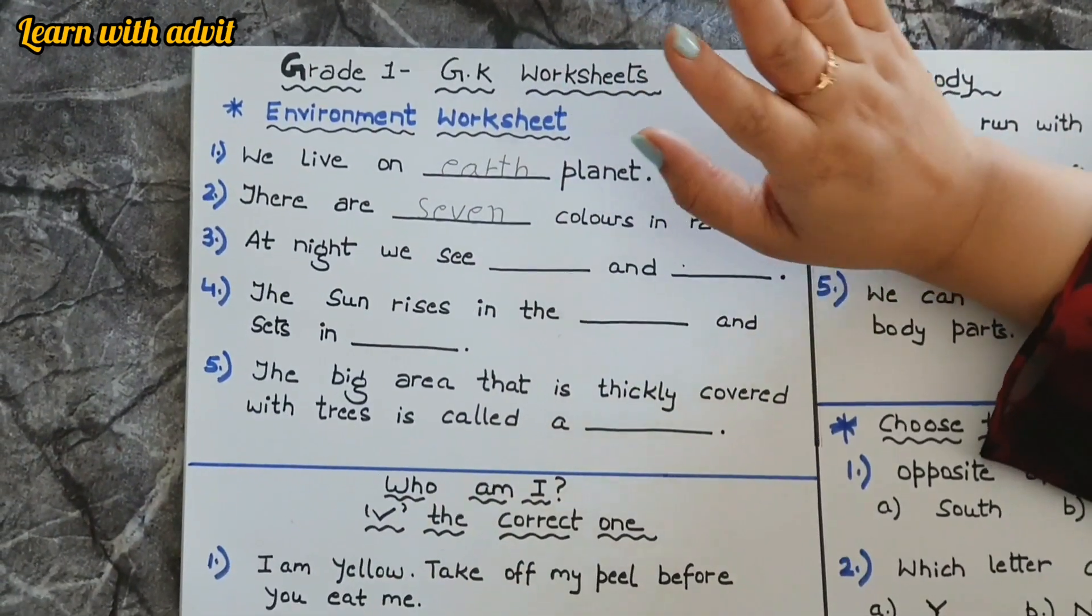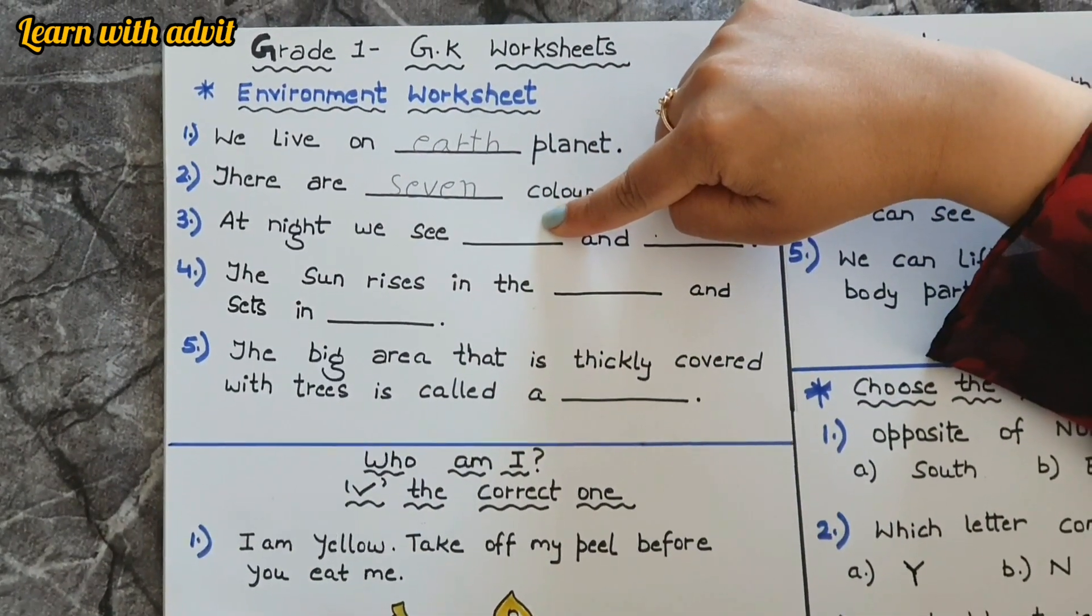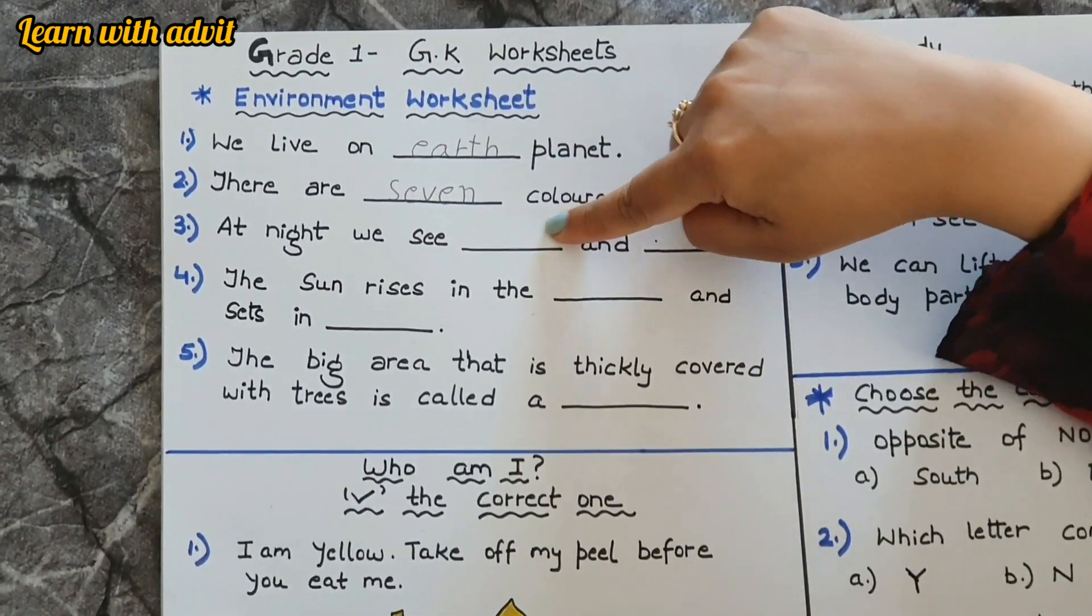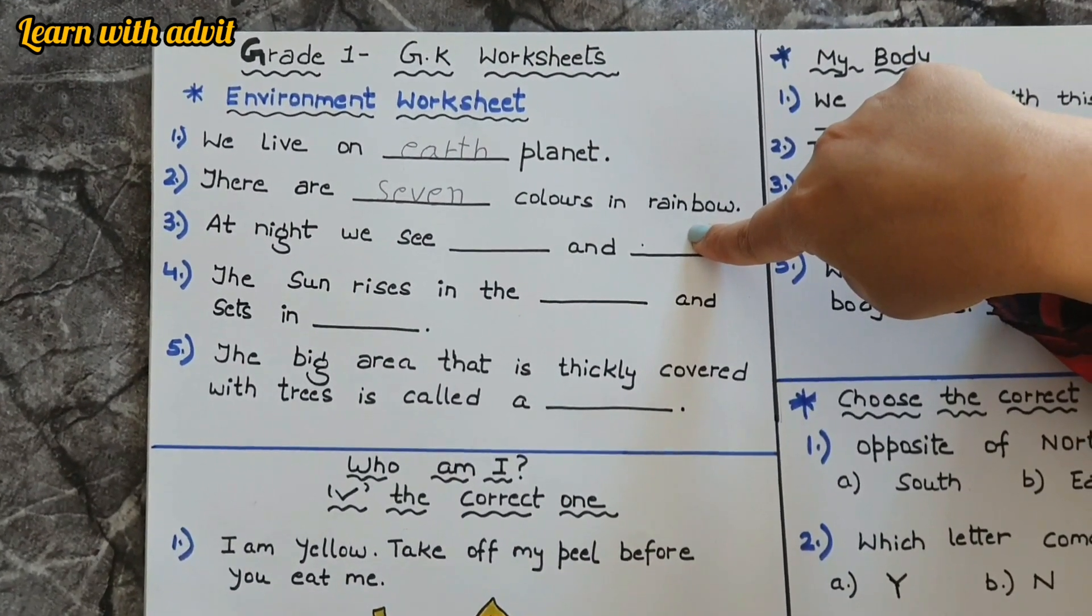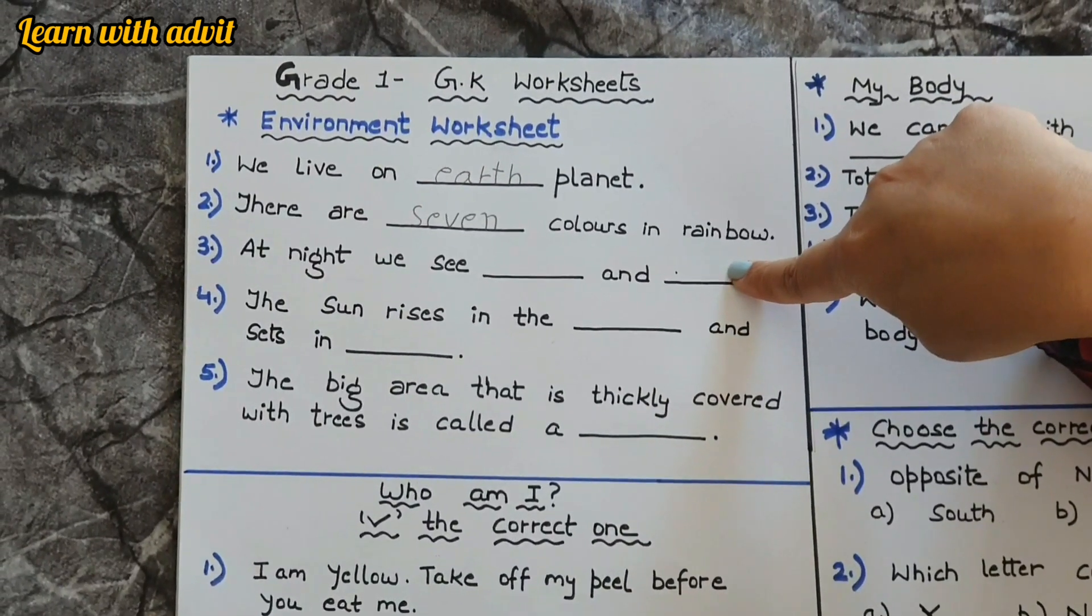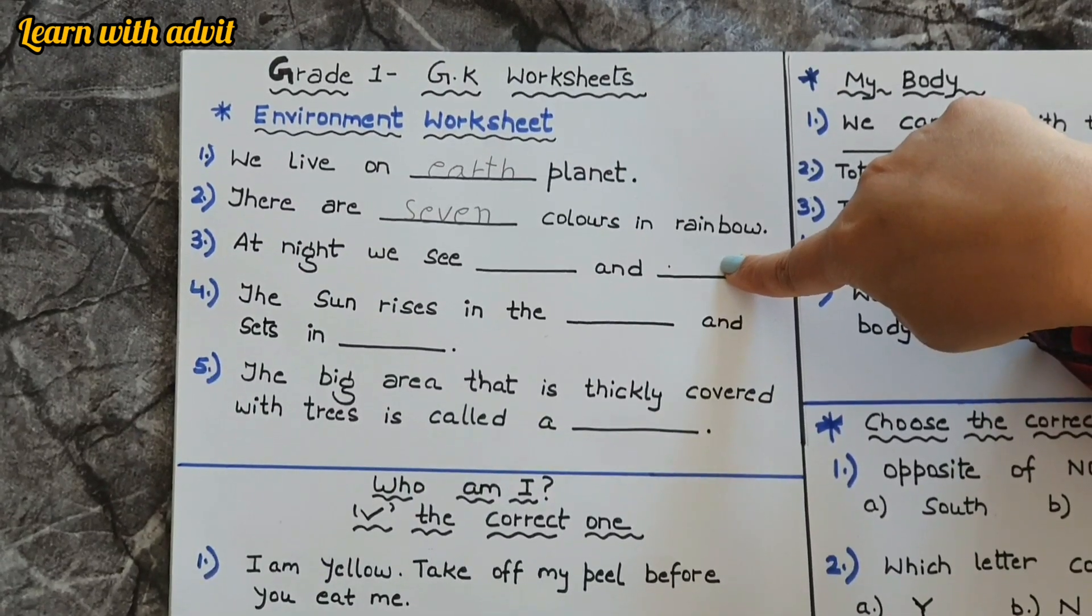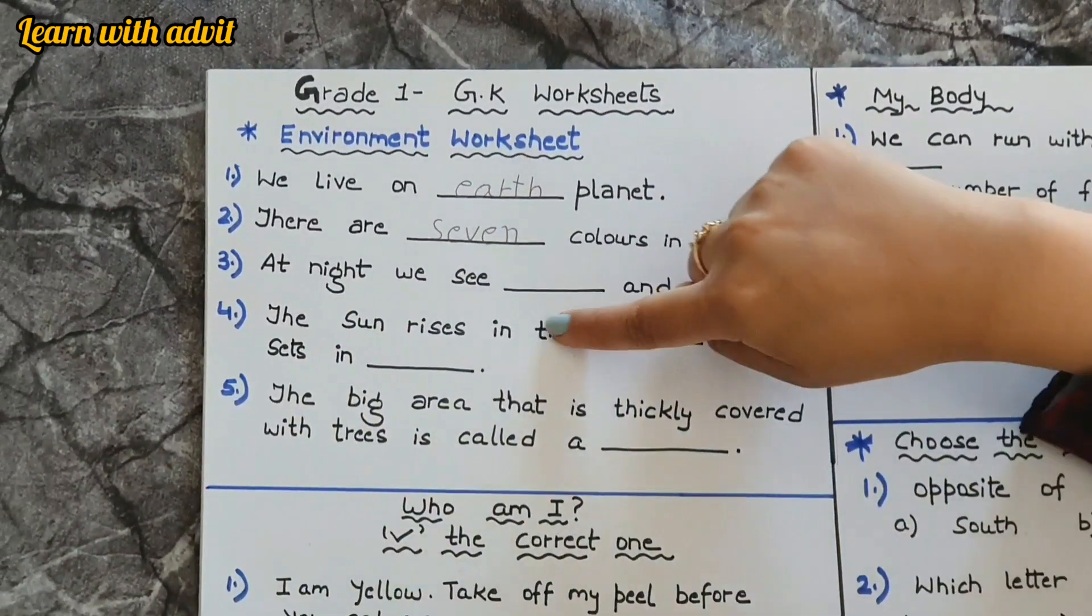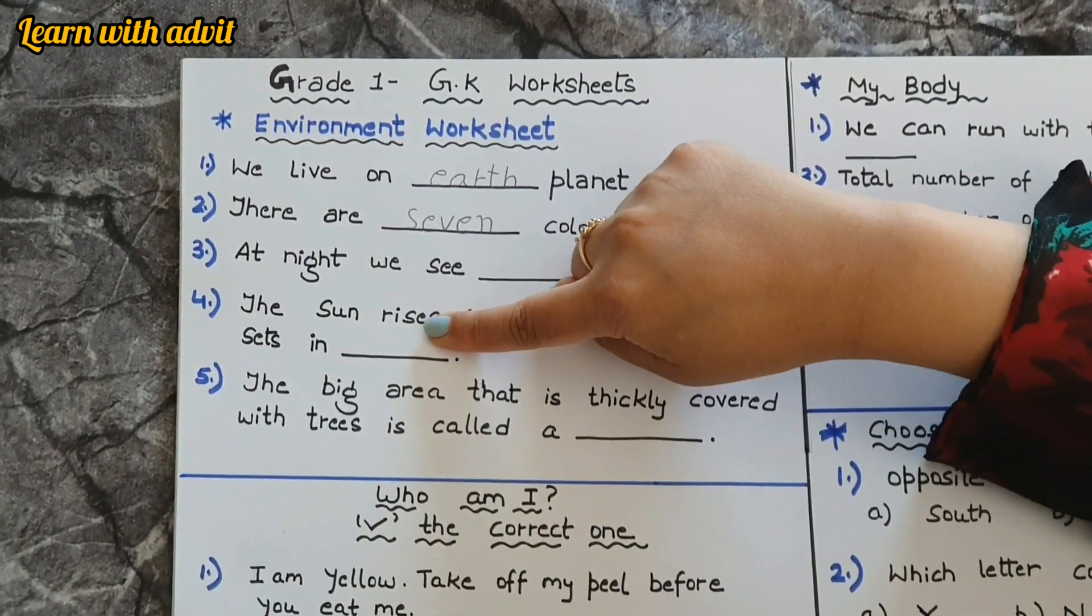At night we see the moon and the stars. Sometimes the moon can be a full moon, a half moon, and a crescent moon, and there are so many different kinds of stars. Very good. The sun rises in the east and sets in the west. Very good.